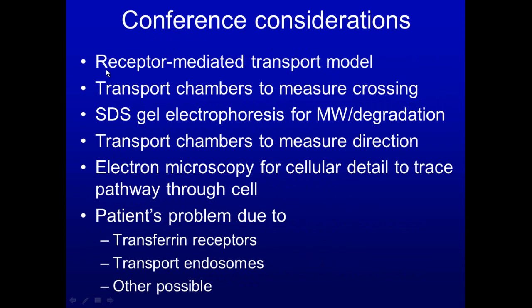In our conference, the receptor-mediated transport model is central. You use transport chambers to measure crossing — polarized cells on a filter, you place something on one side and measure for its presence on the other side. SDS gel electrophoresis is used to measure molecular weight and determine if things are degraded during transport. If transferrin is degraded, the molecular weight will have changed.